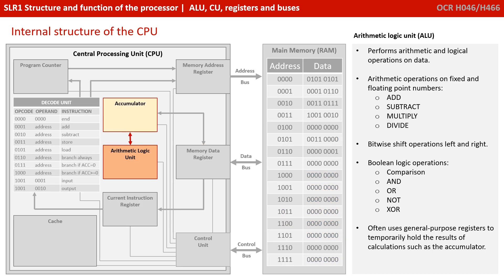Another vital component of the CPU is the arithmetic logic unit, or ALU. It performs arithmetic and logical operations on data. Arithmetic operations are things like add, subtract, multiply and divide, and bitwise shift operations left and right, which we look at in later videos. Logical operations are comparisons and boolean logic — for example, AND, OR, NOT and XOR.